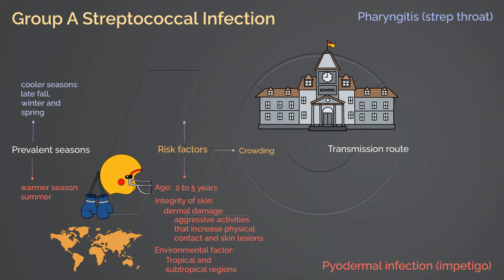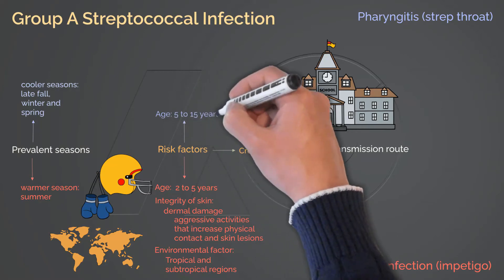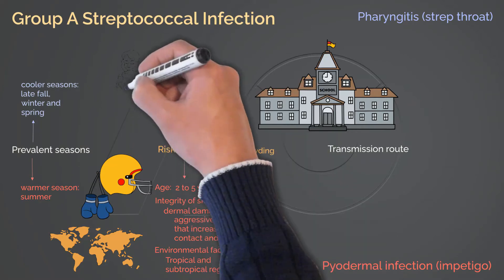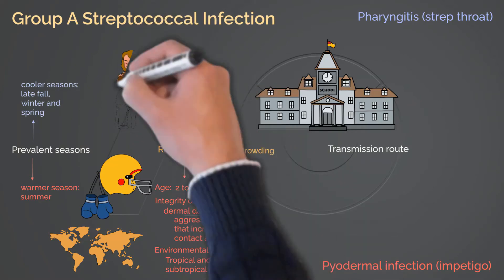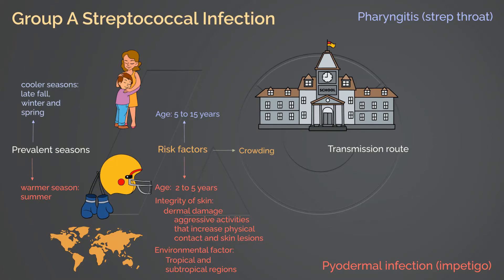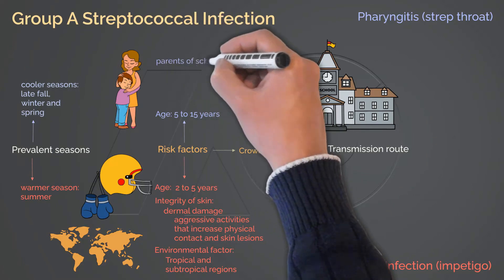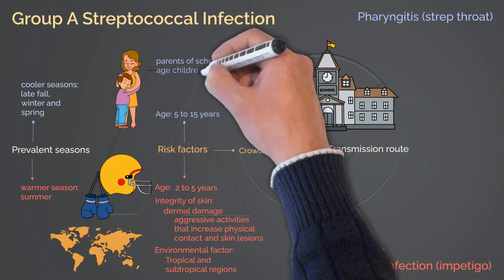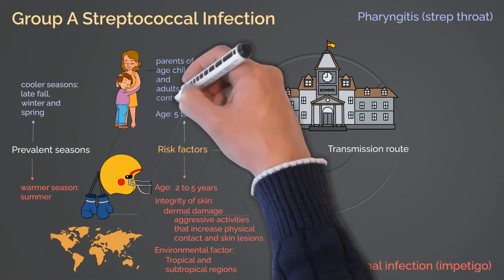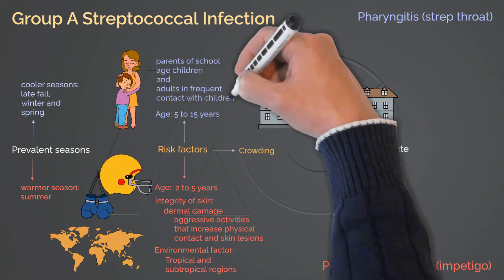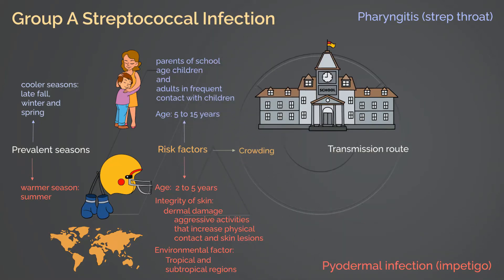Streptococcal pharyngitis is more prevalent among children between age 5 and 15 years, while frequent and close contact increases risk for infection. Adults, including parents of school-age children and other adults in frequent contact with children, are at increasing risk for strep throat.